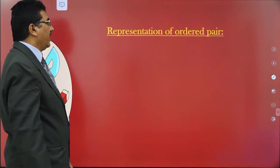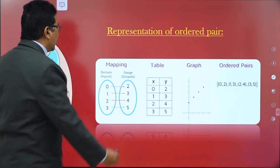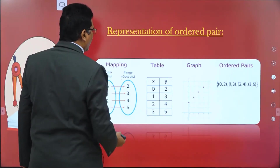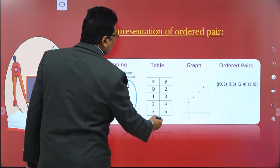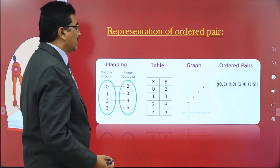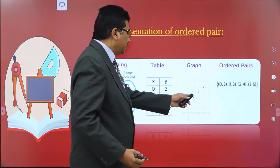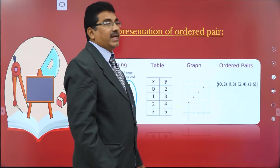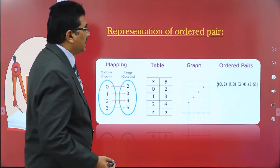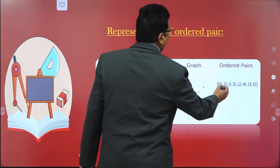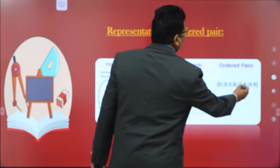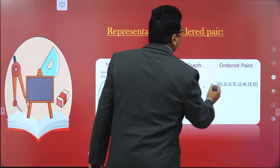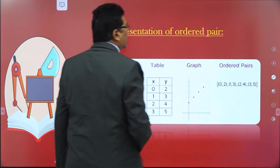Representation of ordered pairs: suppose this is a mapping where x-values are 0, 1, 2, 3 and y-values are 2, 3, 4, 5. So the ordered pairs are (0,2), (1,3), (2,4), and (3,5). The set of ordered pairs is {(0,2), (1,3), (2,4), (3,5)}. In this, the first element is called the first component and the second one is called the second component.